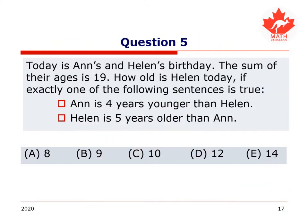Let's try another question. Today is Anne's and Helen's birthday. The sum of their ages is 19. How old is Helen today? If exactly one of the following sentences is true: Anne is 4 years younger than Helen, or Helen is 5 years older than Anne. They can't both be true. Exactly one of the following sentences is true. Then how old is Helen? Take a second, pause this video, figure this out.